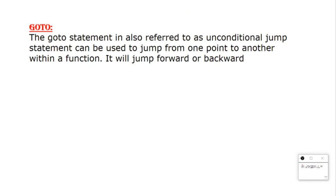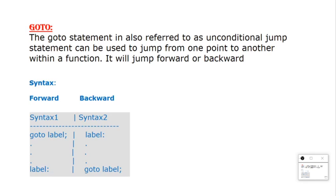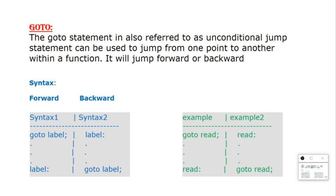Now let's go to the goto statement. The goto statement jumps directly — sometimes forward, sometimes backward. Goto is an unconditional jump statement. The syntax has two forms: forward jump and backward jump. When writing goto, you use a label name with a semicolon after goto, and a colon after the label name itself.